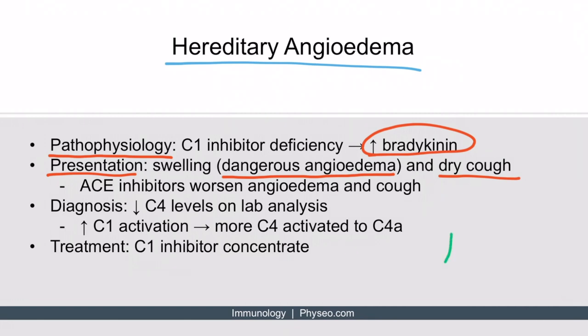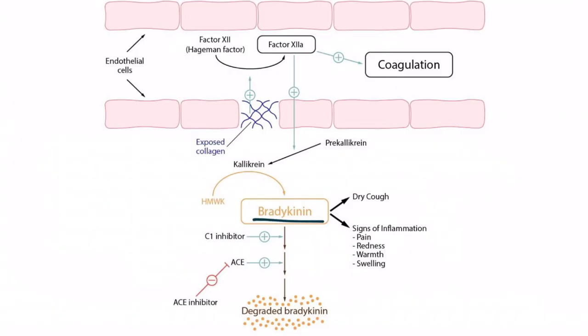Let's think about this angioedema further. It's a logical consequence of increased vascular permeability — bradykinin increases vascular permeability, which leads to swelling, and in these patients the swelling is significant enough that we call it angioedema. To summarize: bradykinin can be broken down by C1 inhibitor and angiotensin converting enzyme. If a patient has a C1 inhibitor deficiency, that leads to increased bradykinin.